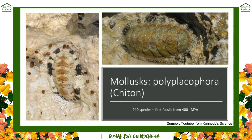Let's start with the chitons. If you go walking on a rocky beach anywhere in the world — whether on the west coast, in the tropics, or up in Alaska — you might come across this little animal stuck to the rocks. It's got these plates, so it's also called Polyplacophora: 'placa' meaning plate, 'poly' meaning many. It's a fairly primitive mollusk with about 940 species, and we first see them around 400 million years ago.